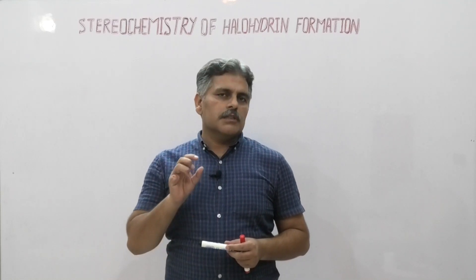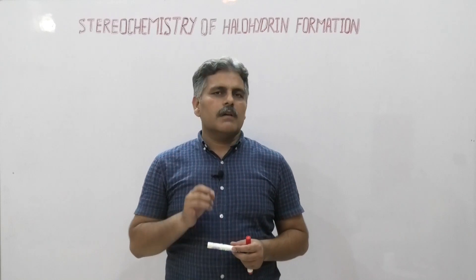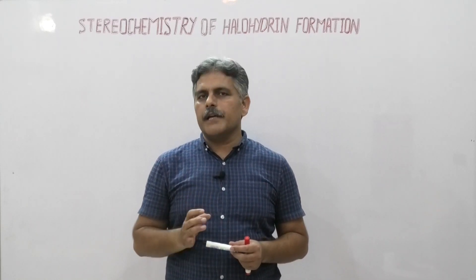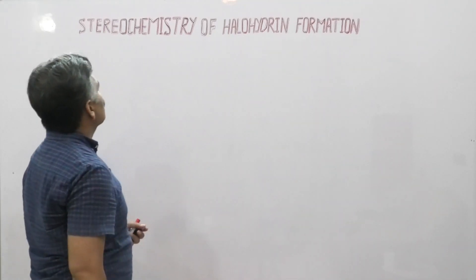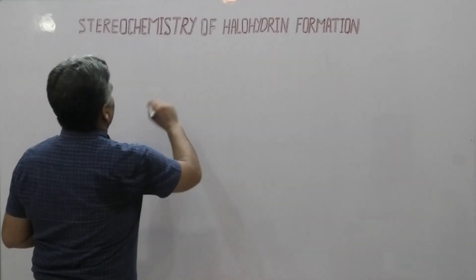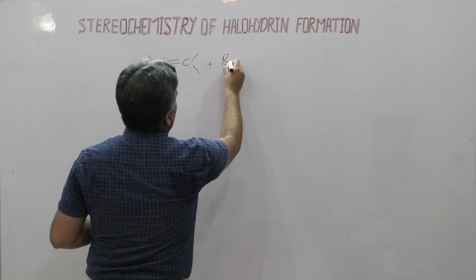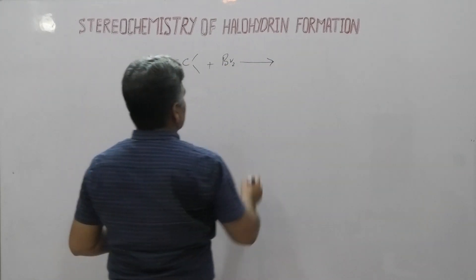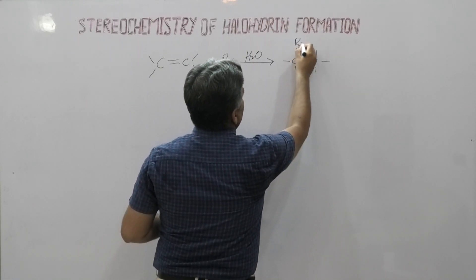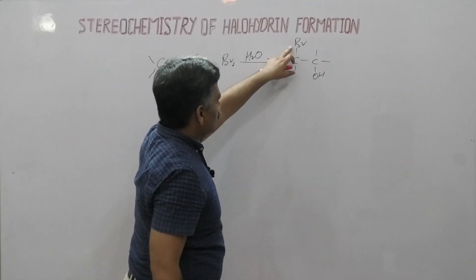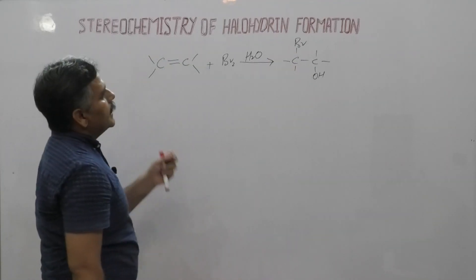In the case of halohydrin formation, the hydroxyl and halogen attach on opposite faces of the carbon-carbon double bond. I will also discuss an example in which I explain both orientation and stereochemistry in halohydrin formation. For the general reaction, suppose we have a carbon-carbon double bond. When it reacts with a halogen like bromine in the presence of water, then we have our product — a vicinal halohydrin. Halogen and hydroxyl attach at opposite faces, so this type of addition is known as anti-addition.